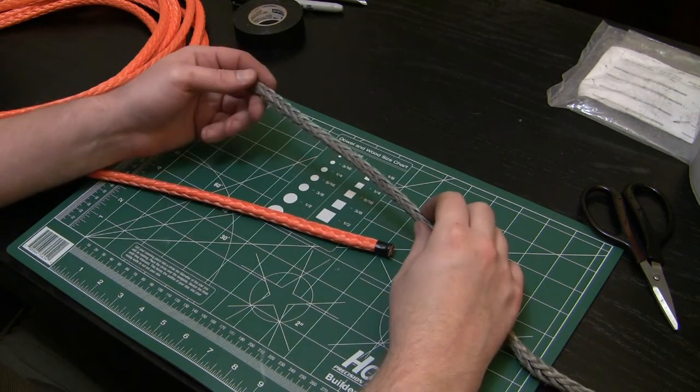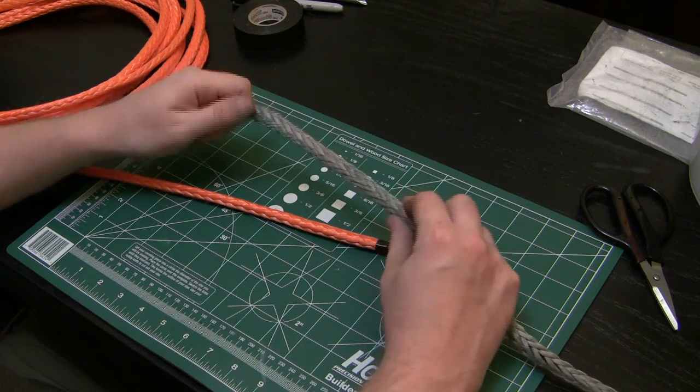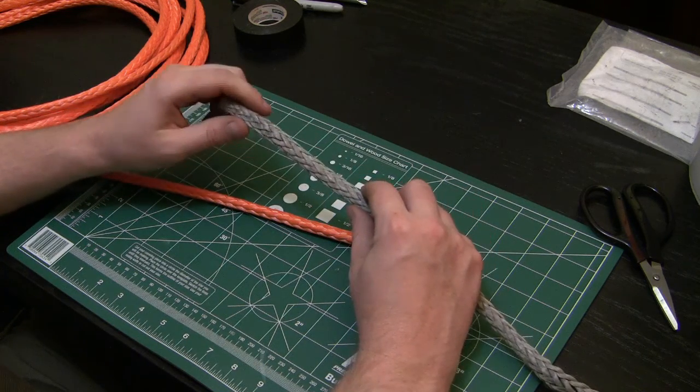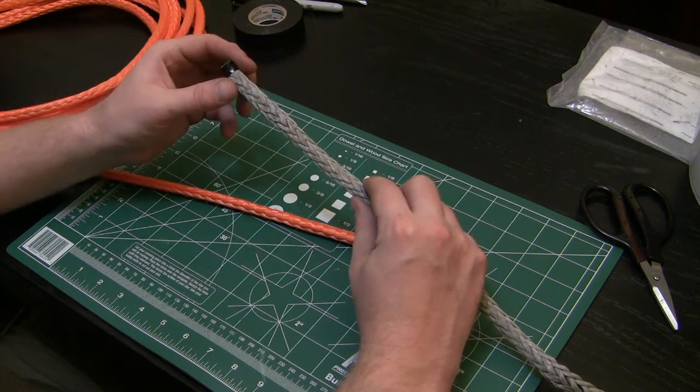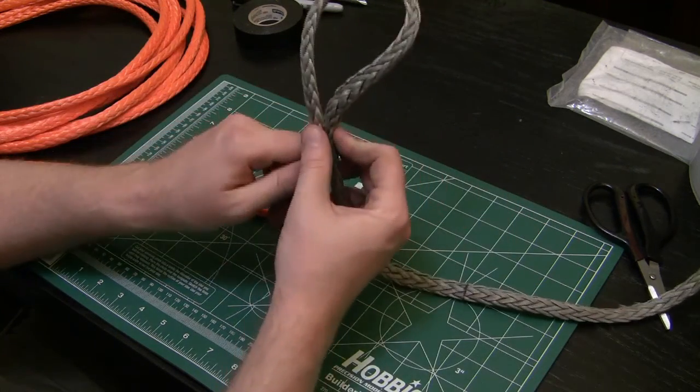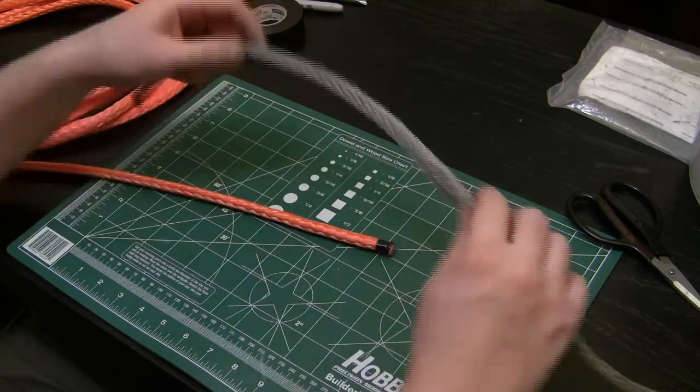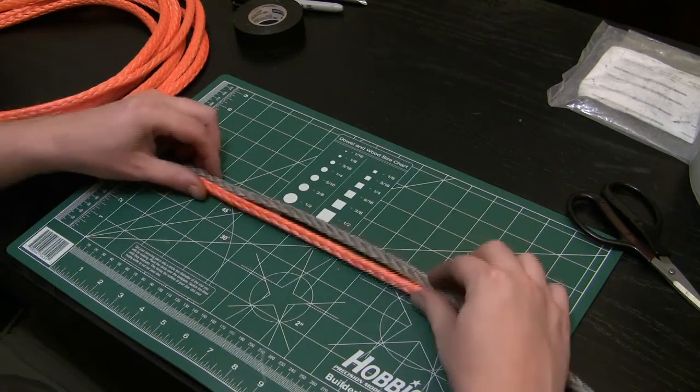For this splice we're going to be doing the end-for-end splice. This is a splice that you would use if your line breaks in the middle, not right near the end where you would do an eye splice and form your loop and put your thimble in.